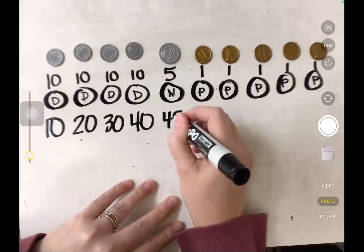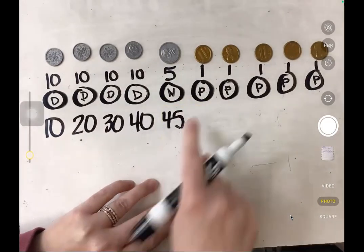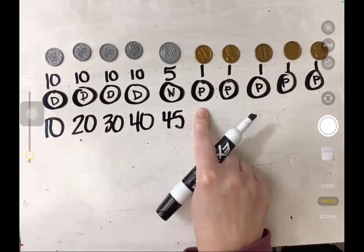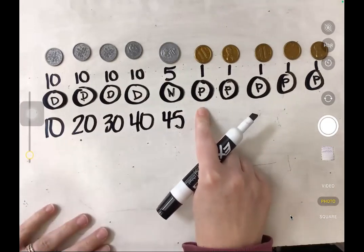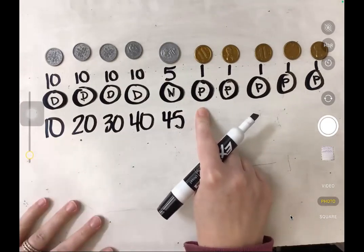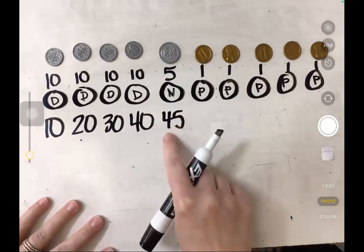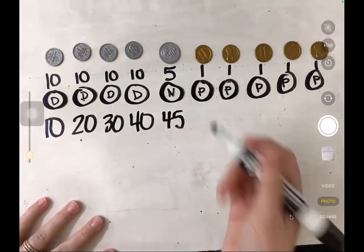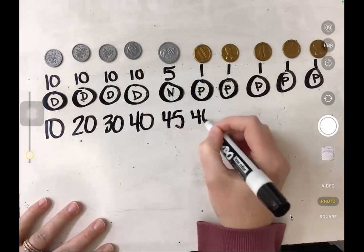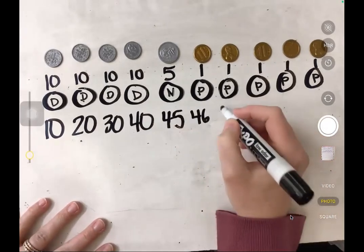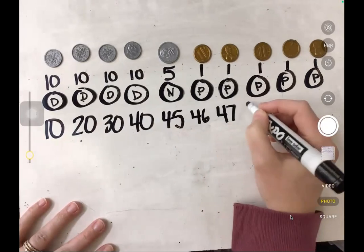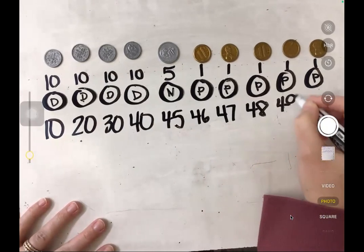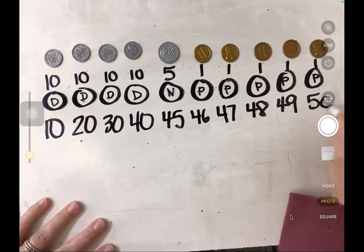45 when I add that nickel. But I don't want to add five more — instead, I need to start counting by ones because now I'm at my pennies, and pennies are worth one cent. So I've got 45. If I add one more, 46 comes next. And then 47, 48, 49, and 50.